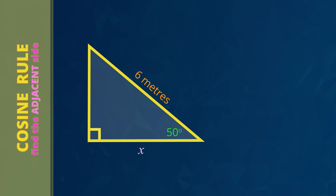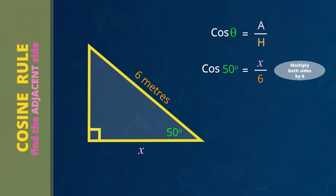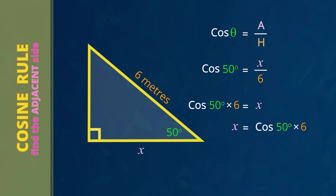The first step is to write the cos rule: cos theta equals adjacent side divided by the hypotenuse. Next, substitute the numbers that we know. Angle theta is 50 degrees. The adjacent side is X because that's what we're trying to find. The hypotenuse is 6 meters. So cos 50 equals X divided by 6. Now we want to find the length of the adjacent side — that's X. Right now X is divided by 6, so to get X by itself, multiply both sides of the equation by 6. That cancels out divide by 6 and leaves X by itself. We usually write X on the left side and the working on the right side: X equals cos 50 multiplied by 6.